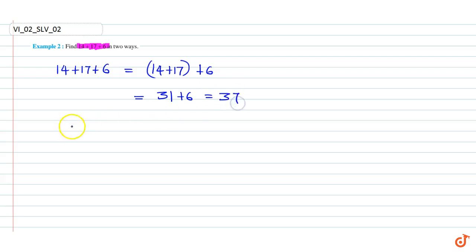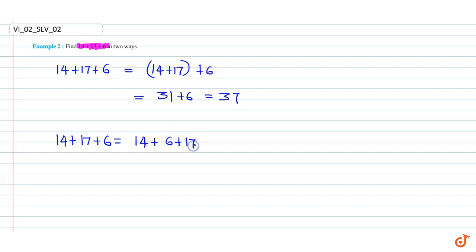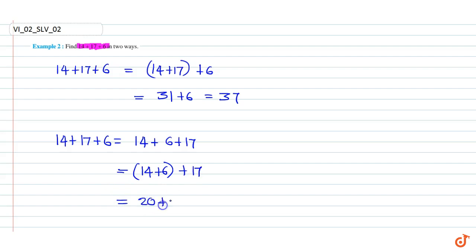Now, 14 plus 17 plus 6. Using the commutative property, we can write 14 plus 6 plus 17. This is equal to 14 plus 6 plus 17, which is equal to 20 plus 17, which is equal to 37. So we have found the sum in two ways.